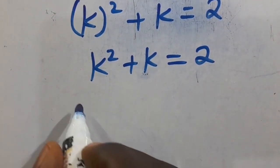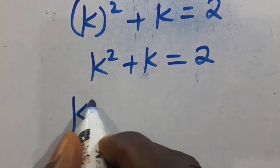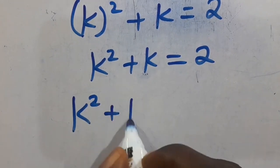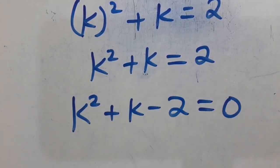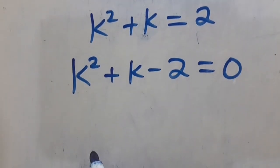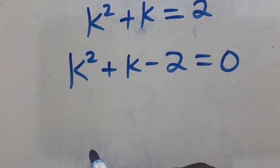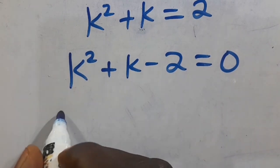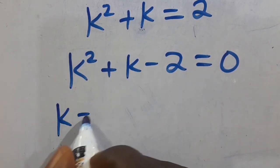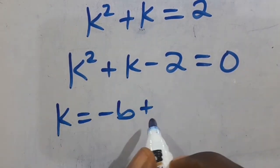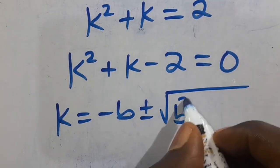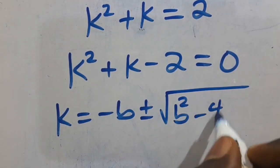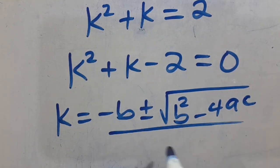Taking the 2 to the other side, we have K squared plus K minus 2 equals 0. Let us apply the quadratic formula: K equals negative B, plus or minus the square root of B squared minus 4AC, divided by 2A.